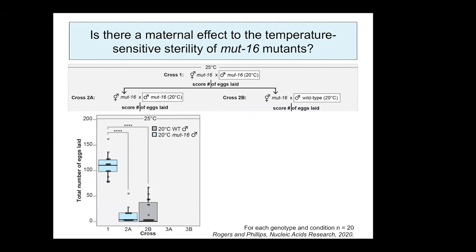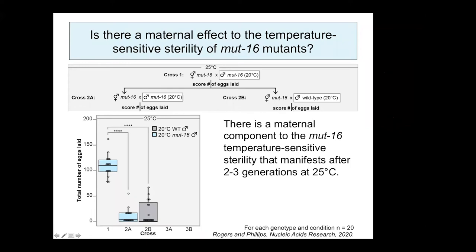To assess a maternal component, we mated individual F1s from Cross 1 — homozygous MUT-16 hermaphrodites cultured at 25 degrees — to either homozygous MUT-16 males cultured at 20 degrees (Cross 2A) or wild-type males cultured at 20 degrees (Cross 2B). We observed a significant reduction in total eggs laid by F1 MUT-16 homozygous hermaphrodites raised at 25 degrees compared to their parental generation, and this was independent of whether they were mated with MUT-16 or wild-type males, indicating a maternal fertility defect associated with multiple generations at elevated temperature.